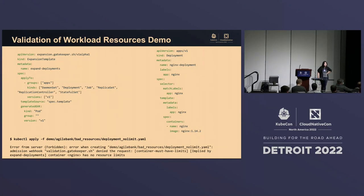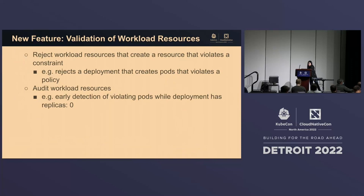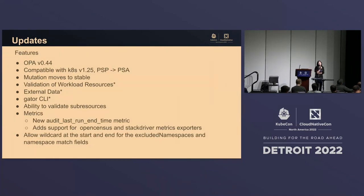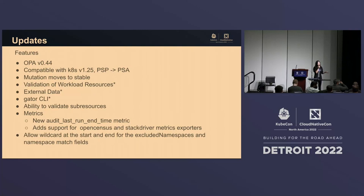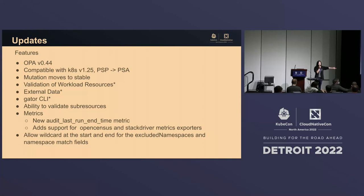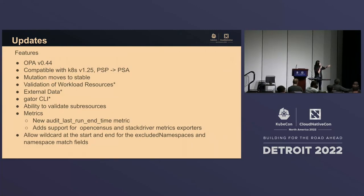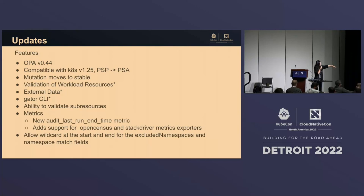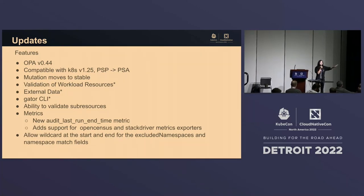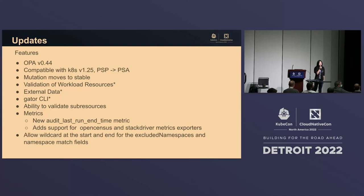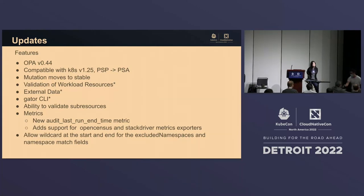One of your slides talked about OpenCensus and Stackdriver exporter integration. I want to know the use case — how do you enforce anything once the metric has already told you what happened? Metrics work like any metrics solution — you want to get violations as metrics, or use the metrics to see how Gatekeeper itself is running, like whether it's healthy. OpenCensus and Stackdriver are just various options for exporting that data out.